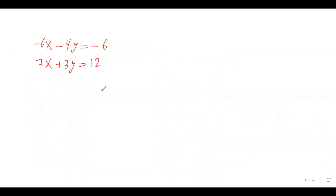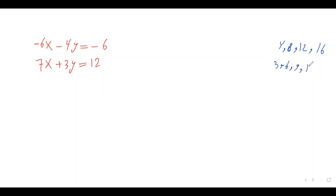Let's take a look at this linear system — two equations. As you can see, the coefficients of none of the two variables are the same: we have 6, 7, 4, and 3. So we need to figure out which variable to eliminate. I want to go with y because for 4 and 3, we can find the least common multiple. The multiples of 4 are 4, 8, 12, 16, and the multiples of 3 are 3, 6, 9, 12, 15. So the least common multiple of 3 and 4 is 12.